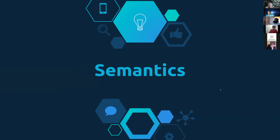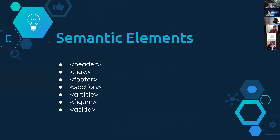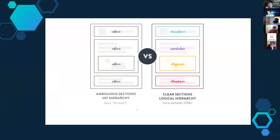The next thing we're going to talk about is semantics. Semantic elements clearly describe their meaning to both the browser and the developer. Here are some semantic elements: the header tag — clearly tells us it's a header. The nav element tells us it's navigation. Footer, section, article, figure, aside — each one of those means something to the browser. On the left-hand side is the same layout as the right-hand side, except using divs — that's div soup. The top is acting as a header, so put it in a header tag. The middle section is your article. If you have an image, don't wrap it in a div — put it in a figure. Then you have your footer.